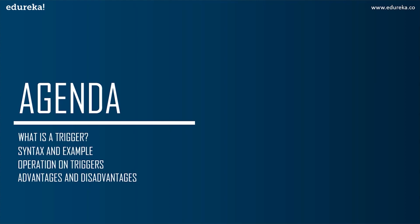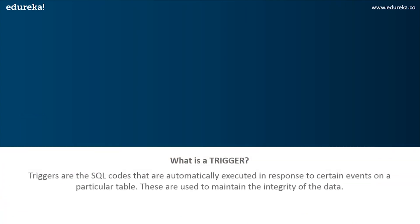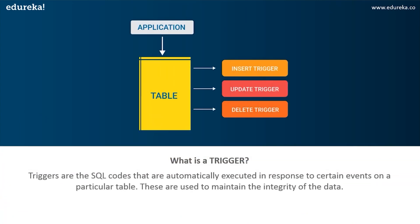Finally, we'll wrap up this session by discussing its advantages and disadvantages. So with that being said, let's get started. The first topic in today's discussion is what are triggers. Triggers are SQL code that are automatically executed in response to certain events on a particular table. These are used to maintain the integrity of the data in a given table. A trigger in SQL works similar to a real-world trigger.